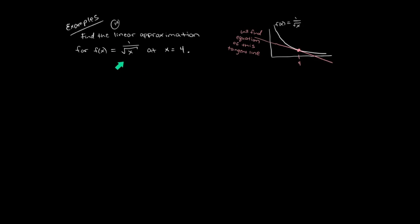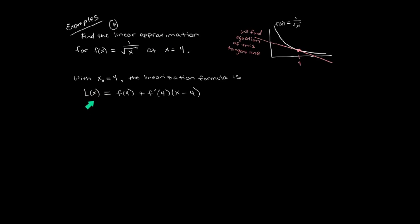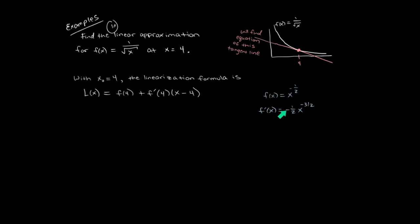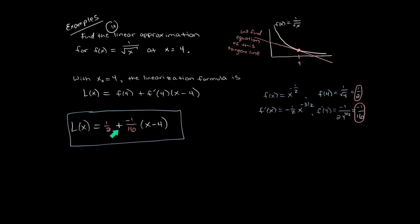Let's look at an example. We're going to find the linear approximation to 1 over square root of x at x equals 4. On the graph of 1 over square root of x at x equals 4, we're going to find the equation of the tangent line — that's what the linear approximation is. The linearization function is f of x-naught plus f prime of x-naught times x minus x-naught, with x-naught equal to 4. We use our function, take the first derivative, plug in 4, and get f of 4 equals one half, and f prime of 4 equals minus 1/16. That's our linearization.